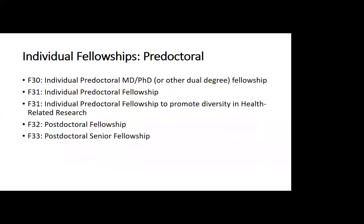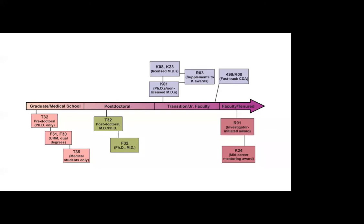This slide shows a color chart indicating the different types of awards available through the National Institutes of Health. Those of you who are pre-doctoral students are eligible to apply for T32s. If you're a postdoc, you're also eligible to apply for T32s as well as F32s.